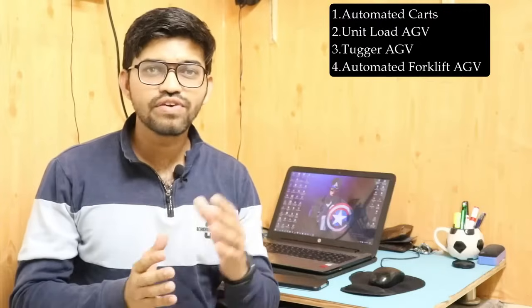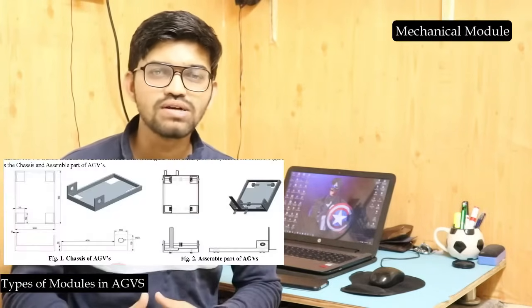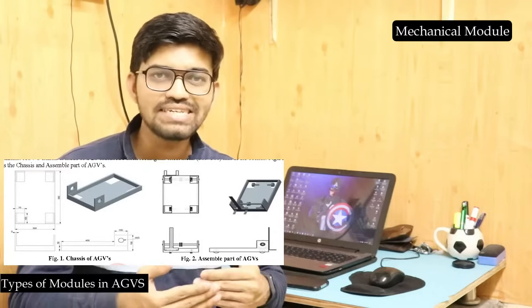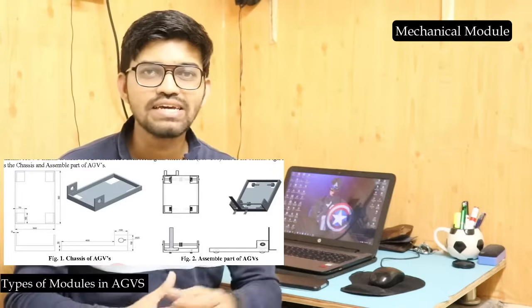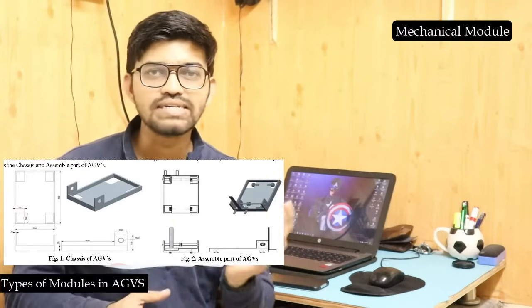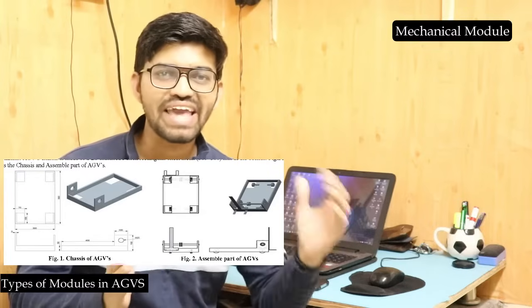Now let's talk about the different modules in the AGV system. The first is the mechanical module, which covers vehicle arrangement, its size, weight-carrying capacity, overall dimensions, and design. This module is focused on the physical and mechanical aspects of the AGV.